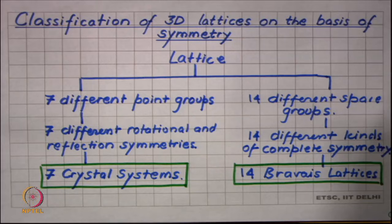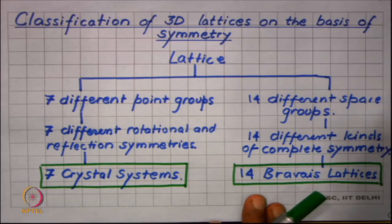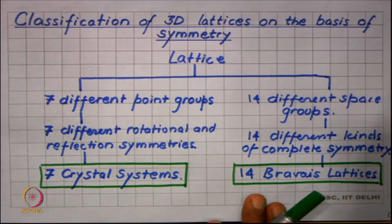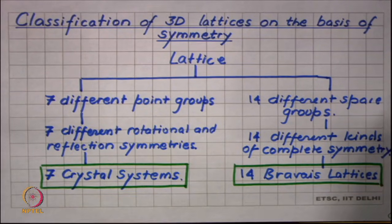We have made all this effort in defining symmetry to present this important concept: the 7 crystal systems and 14 Bravais lattices are not different kinds of unit cell shapes which a lattice can have, but different kinds of point symmetry and space symmetry which a lattice can have.